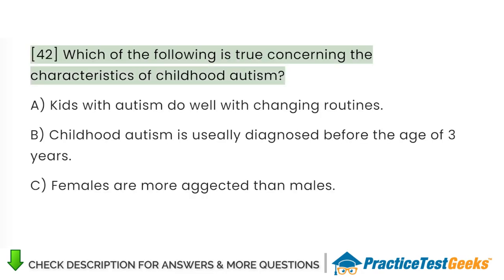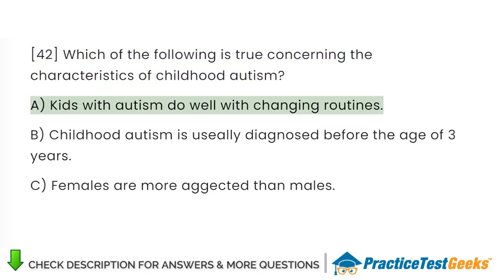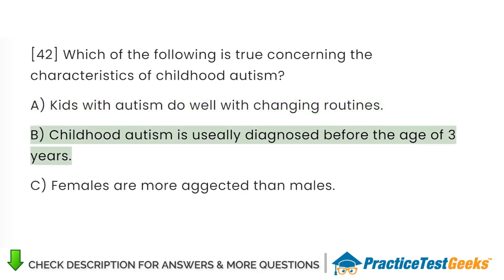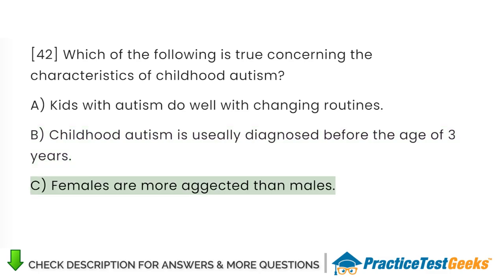Which of the following is true concerning the characteristics of childhood autism? A. Kids with autism do well with changing routines. B. Childhood autism is usually diagnosed before the age of 3 years.